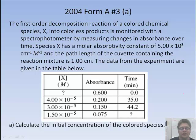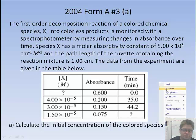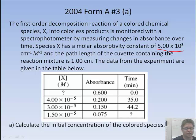So how do we use the use of a spectrophotometer? It's mainly used in the lab. However, in the AP test, they do use questions on spectrophotometry. So here we've got a first-order decomposition reaction of a colored chemical into colorless products. So as you're measuring this, you can measure the time at which the absorption decreases until it turns clear. X has a molar absorptivity constant. You've got the path length of the cuvette. So that's our path length is one centimeter. And the data from the experiment are given in the table below. It's asking us to calculate the initial concentration of the colored species.